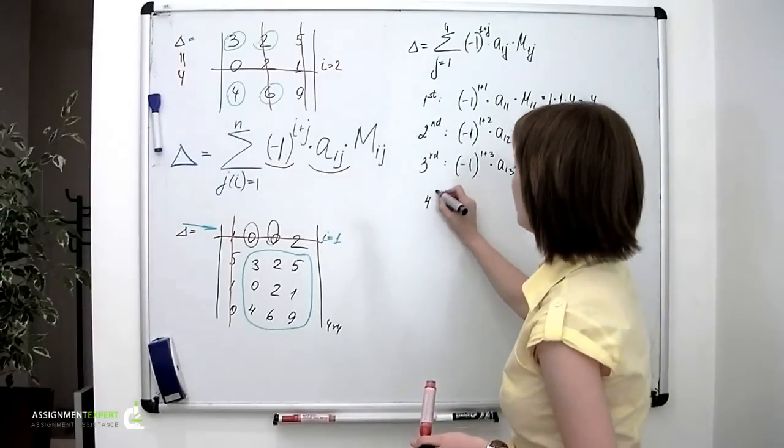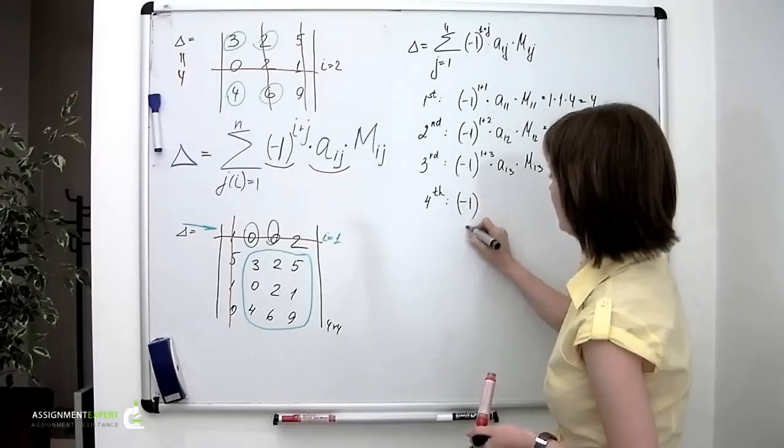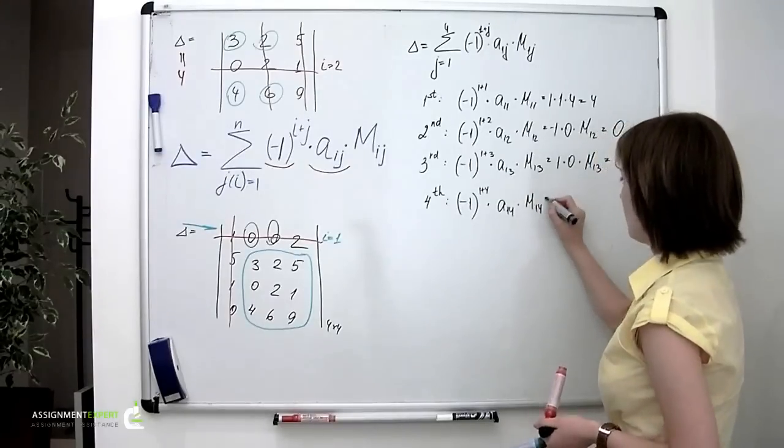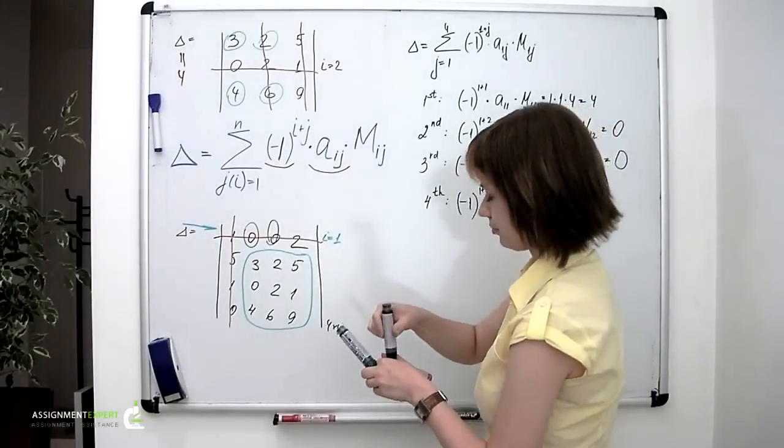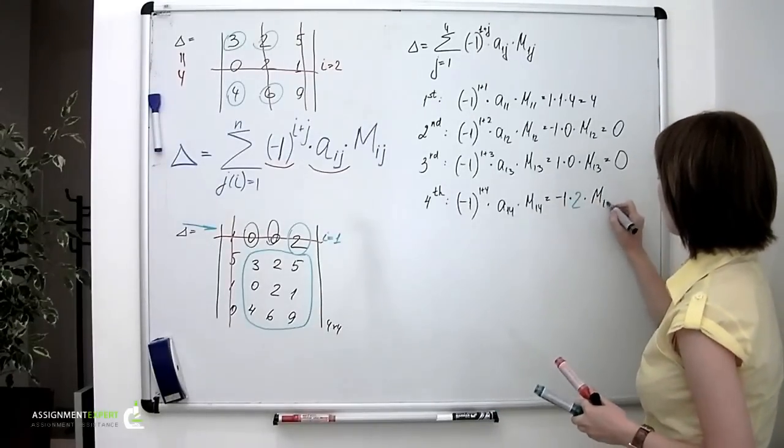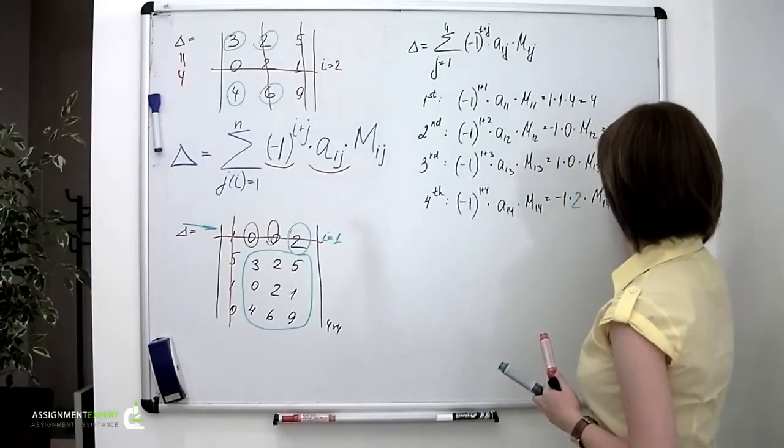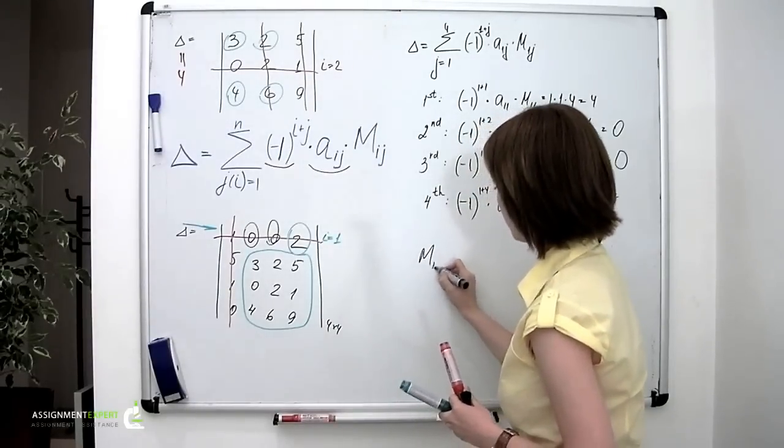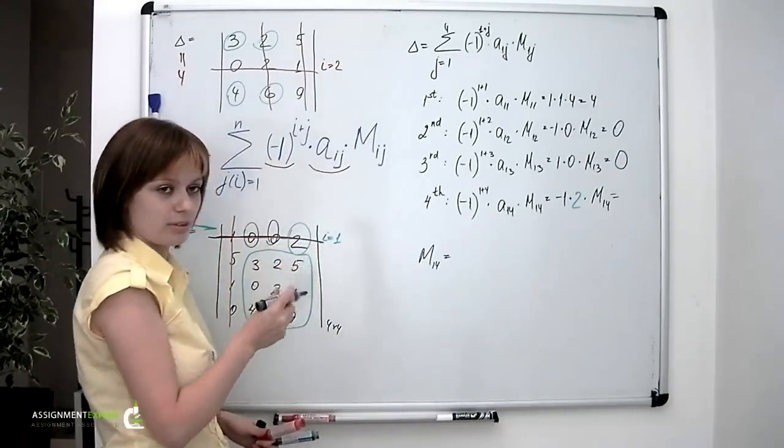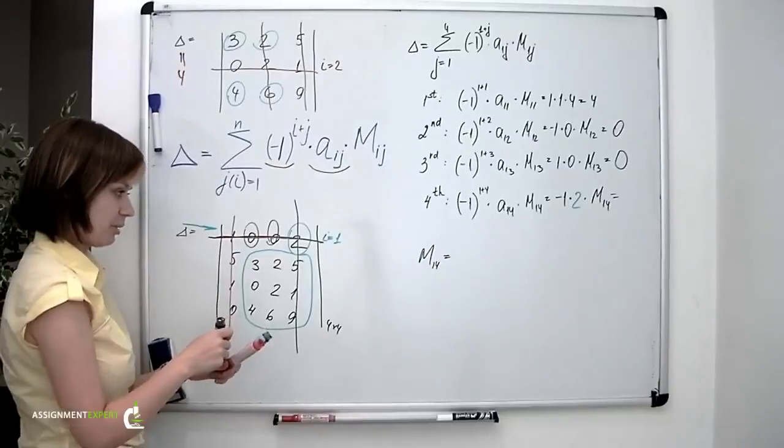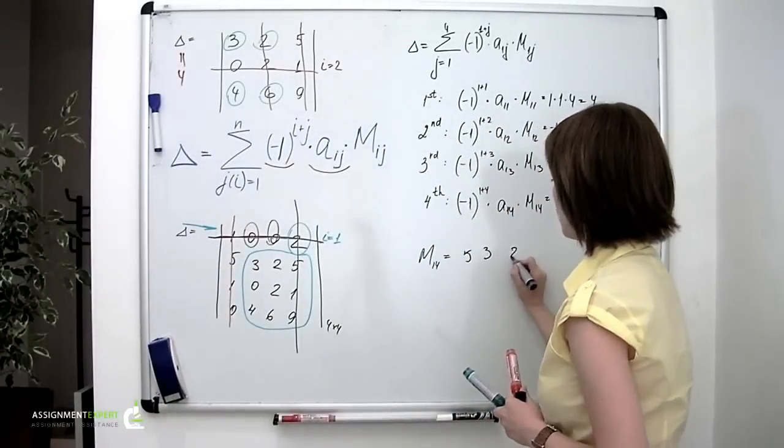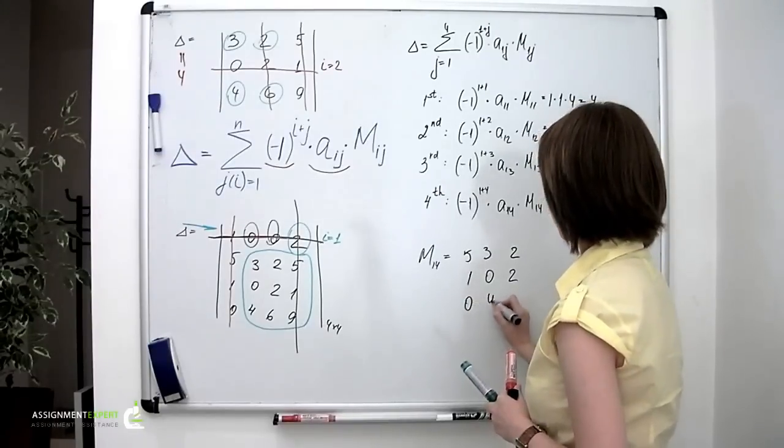And then the fourth summand, I mean, the fourth summand: minus 1 taken to the power of 1 plus 4 times a_1,4 and times M_1,4, which is minus 1 times 2. This time we won't be so lucky. And M_1,4 is defined by crossing out the first row of the determinant and the fourth column of the determinant. So it would go like this: 5, 3, 2, 1, 0, 2, 0, 4, 6.